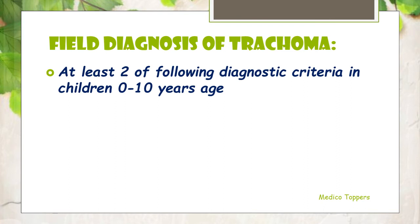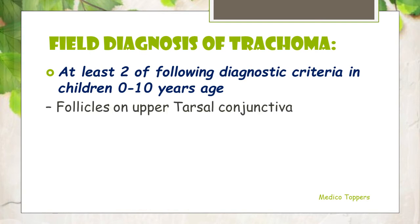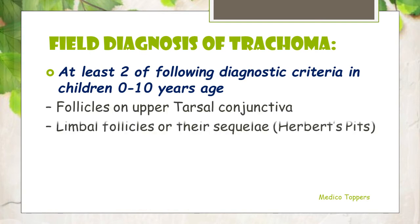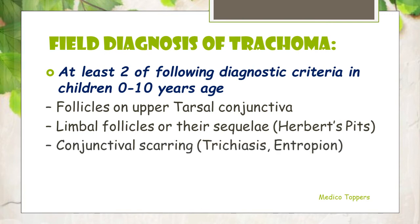Regarding the field diagnosis of trachoma — that is the diagnosing criteria — at least 2 of the following diagnostic criteria in children from 0 to 10 years of age should be present: first, follicles on the upper tarsal conjunctiva; then, limbal follicles or their sequelae, also called Herbert's pits; then, conjunctival scarring such as trichiasis or entropion; then, vascular pannus. If any 2 of these 4 conditions are present in the age group from 0 to 10, it is considered to be trachoma.